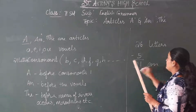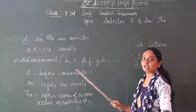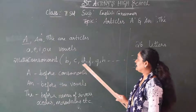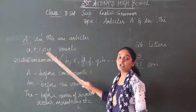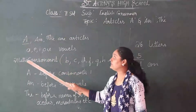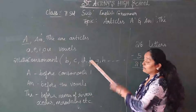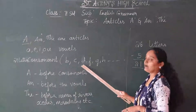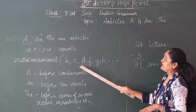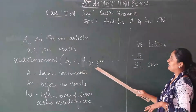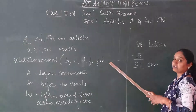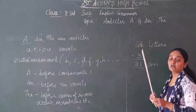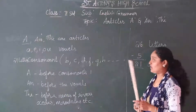So what are these 21 letters? You have to leave the 5 vowels. Then what is pending will be consonants — B, C, D, F, G, H, J, K, and so on. Those are consonants.